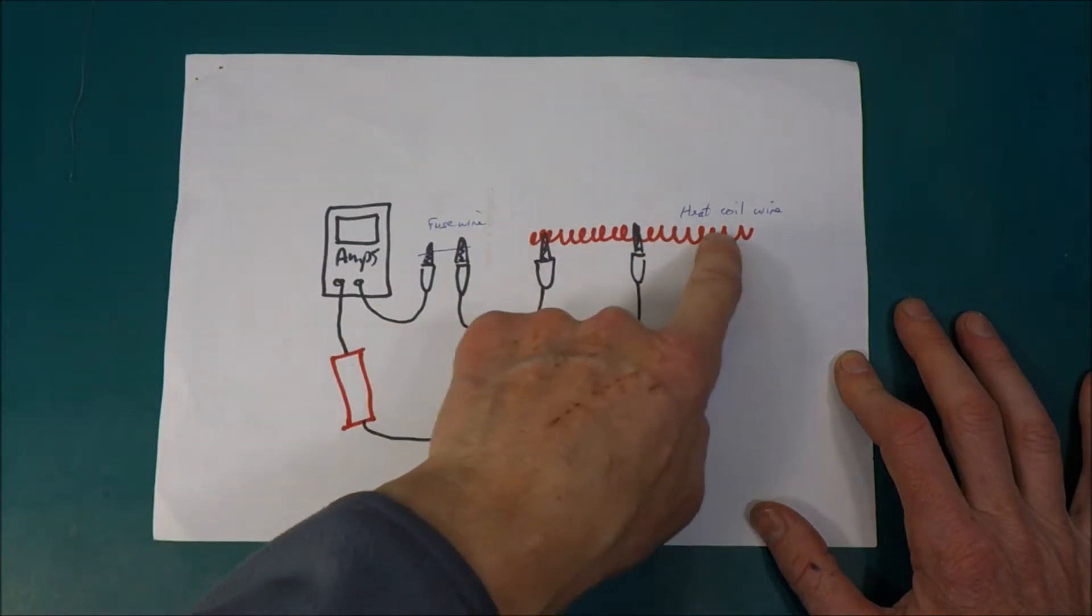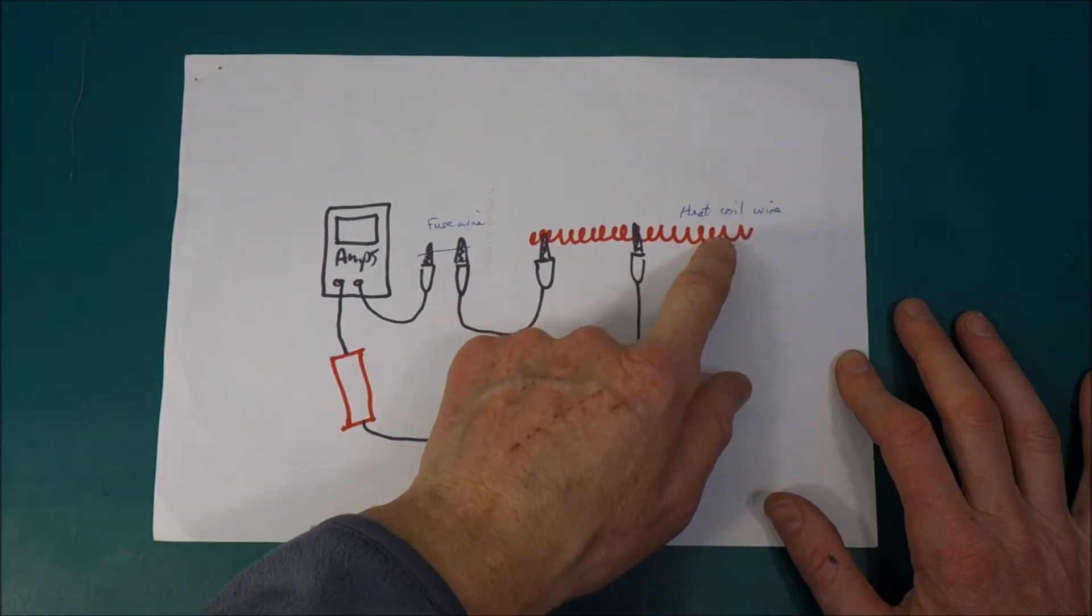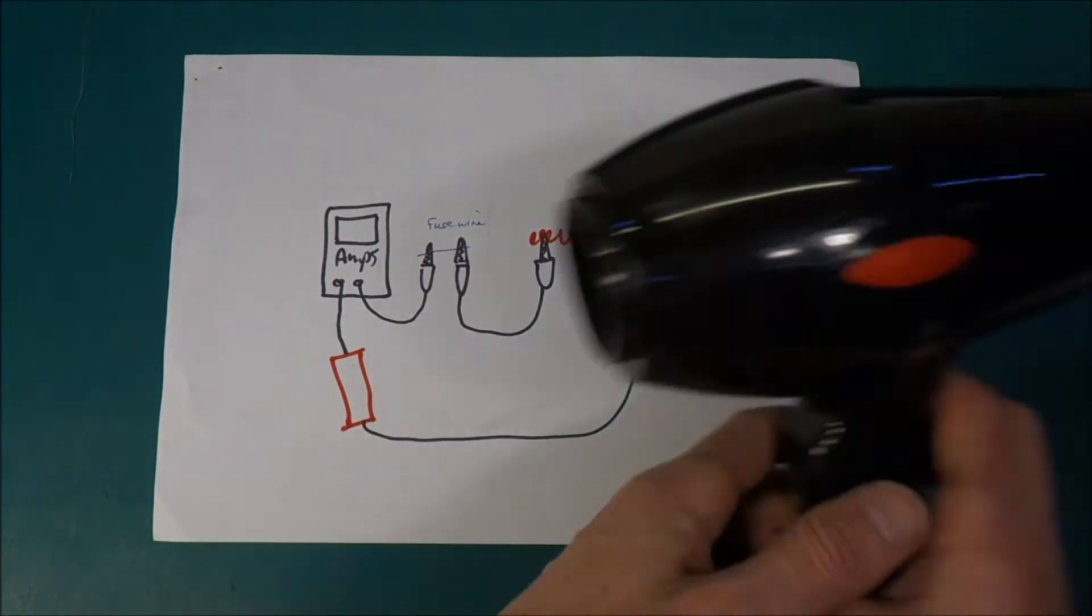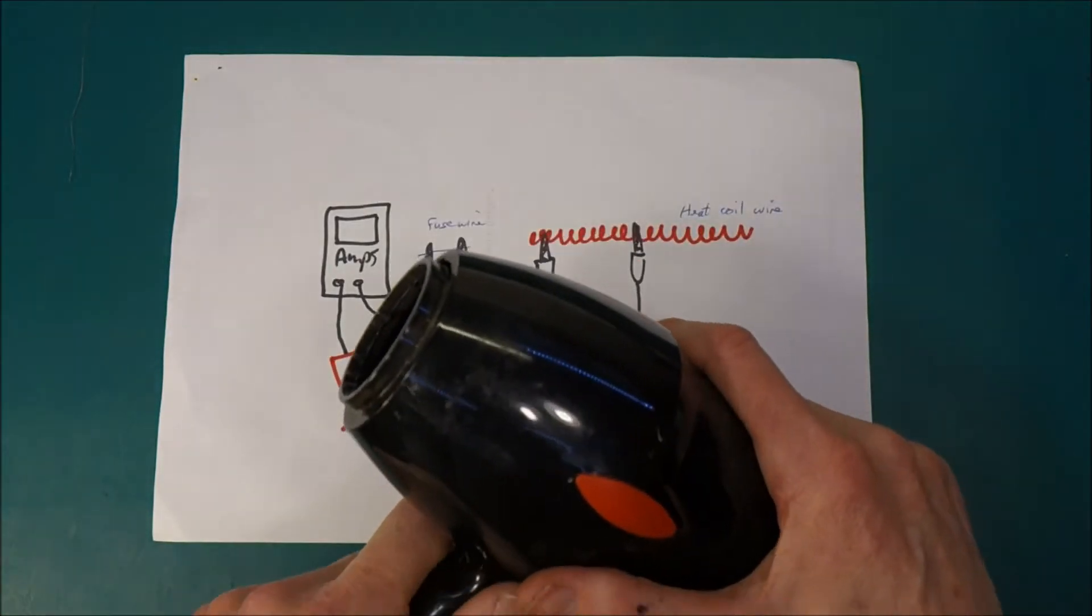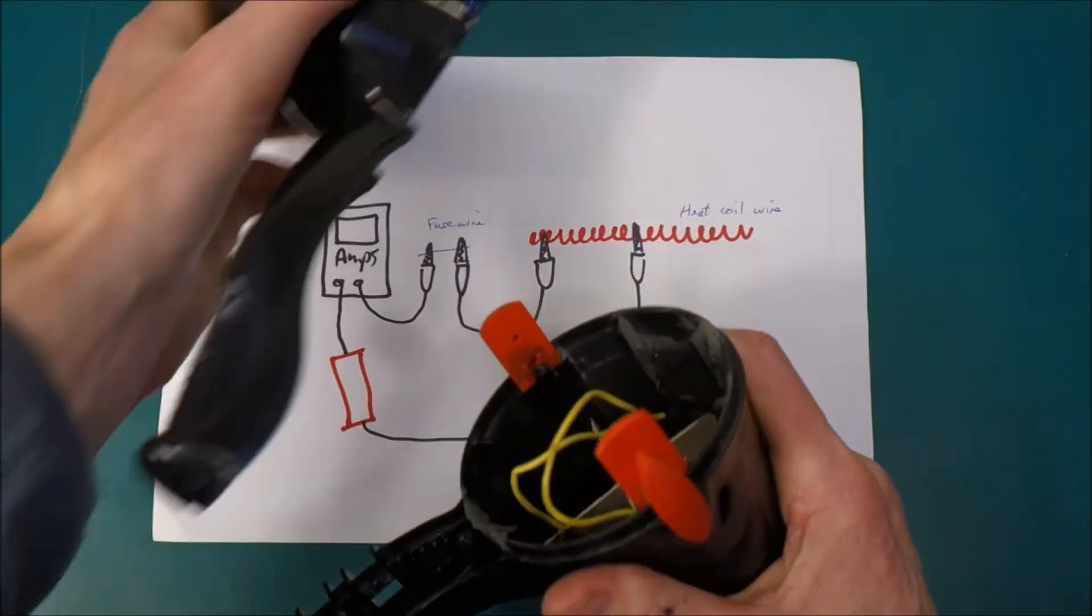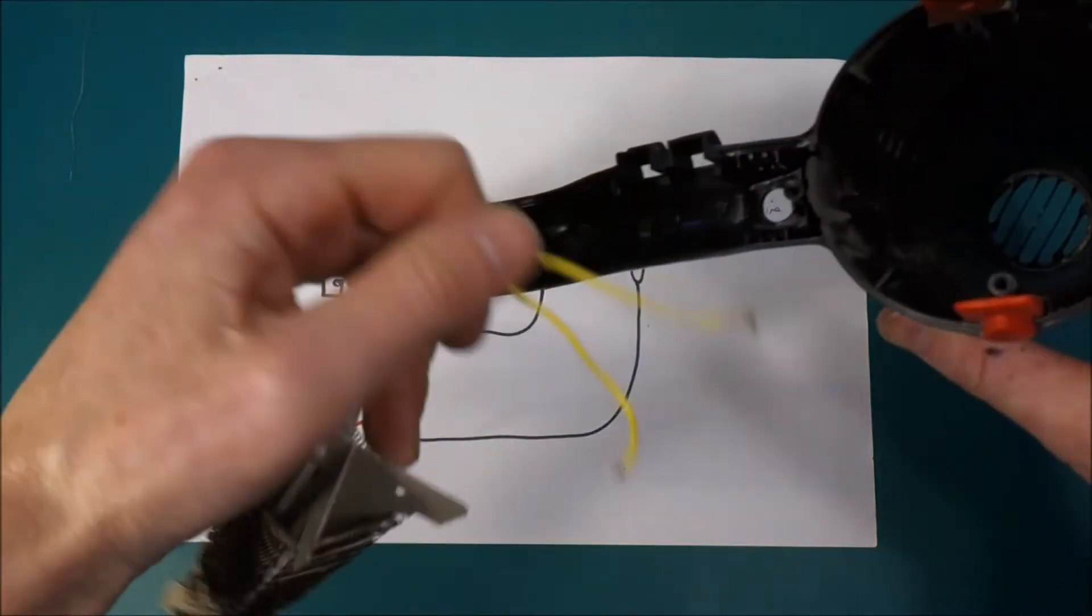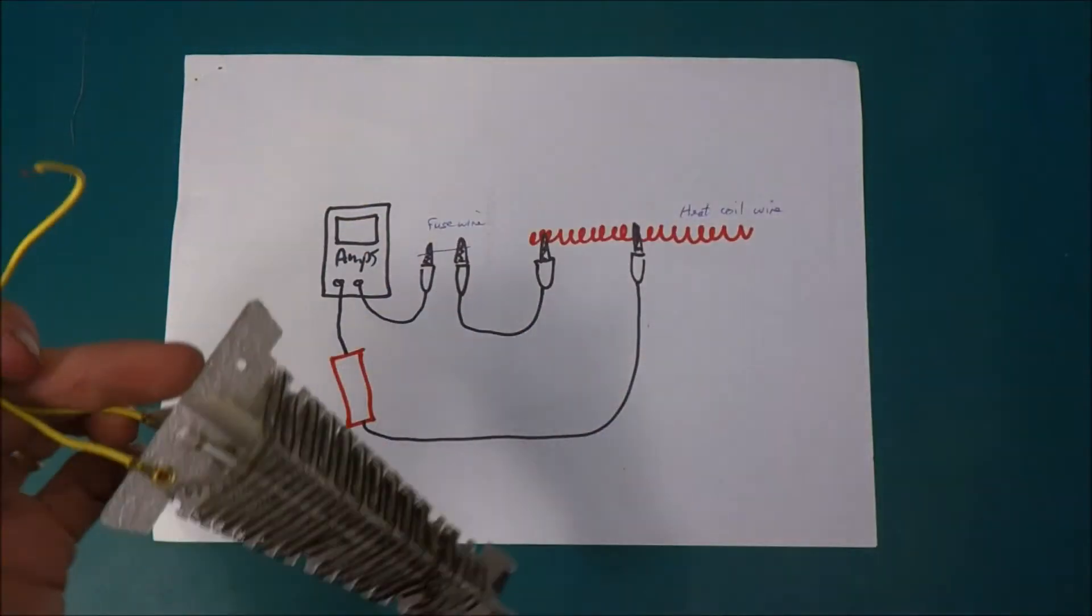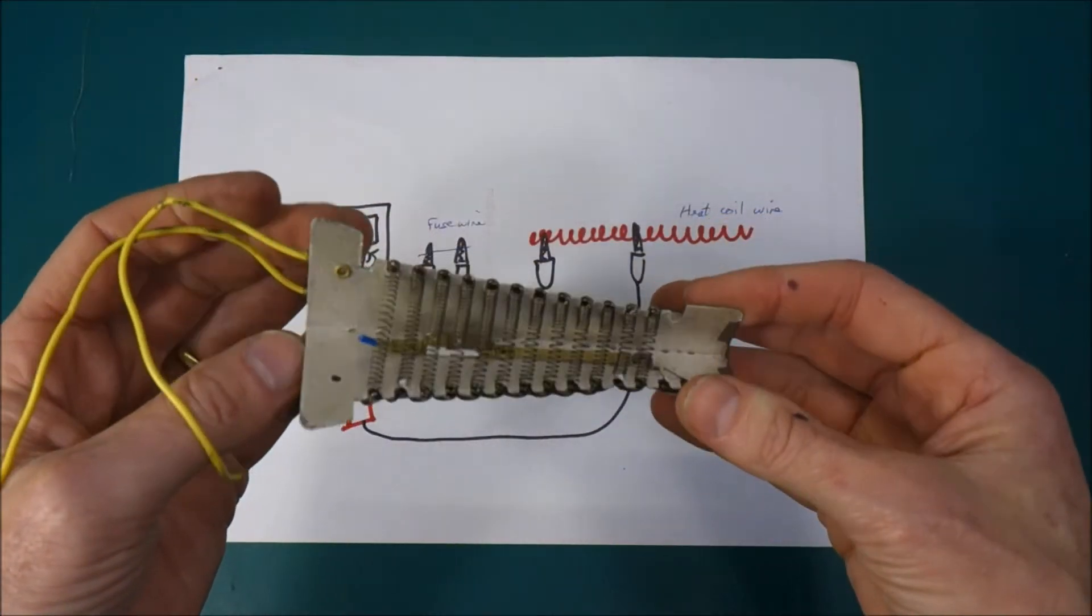Now to get yourself a nice piece of heating coil wire, the cheapest, simplest way that I know is to get a hair dryer and pull it open. And here's what I prepared earlier. And inside you will find a motor and switches but also this lovely piece of heating element.